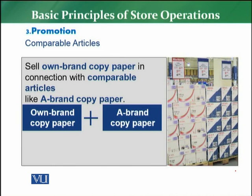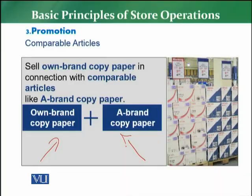Complementary articles: when you promote a product, you also display complementary articles — for example, a vacuum cleaner and its accessories displayed together. The last example is comparable articles: sometimes the retailer has their own brand and compares it with an A-brand, such as an AA copy paper compared to Sigma or a local copy paper. This mass merchandising approach allows the customer to compare and buy the product the retailer wants to sell. Promotion as a principle is very important because it helps communicate with the customer, enabling them to buy more and the store to sell more.